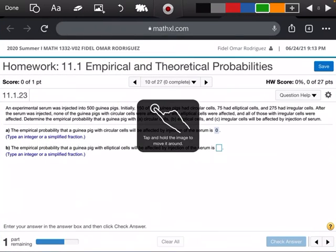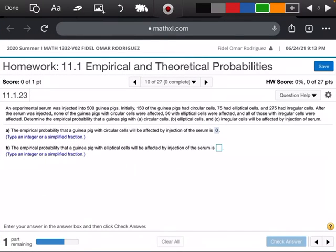So now we're looking at the ones that have elliptical cells. So remember, the number of pigs that had elliptical cells were 75, so that's going to be my denominator. These are the ones with the elliptical cells. And so look what it tells me right here. It says 50 with the elliptical cells were affected, so it's 50 out of 75.